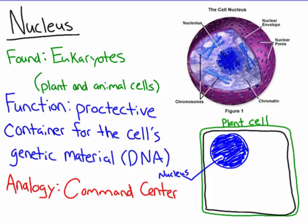Prokaryotes have DNA in their cells, but it just doesn't have a protective container called the nucleus. So eukaryotes have a nucleus. The nucleus would act as the command center. There is only one nucleus per cell.